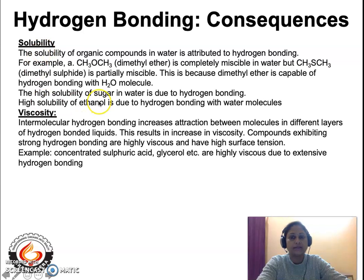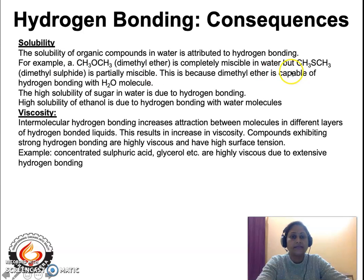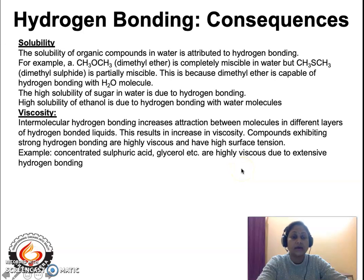The third consequence is solubility. Molecules such as dimethyl ether, ethanol, or acetic acid undergo hydrogen bonding with water molecules and are therefore soluble in water. Whereas dimethyl sulfide will not exhibit hydrogen bonding and is therefore not soluble in water. The fourth consequence is that molecules which undergo intermolecular hydrogen bonding exhibit high viscosity; high viscosity indicates that a molecule is undergoing intermolecular hydrogen bonding.